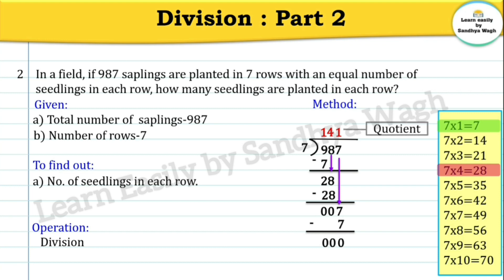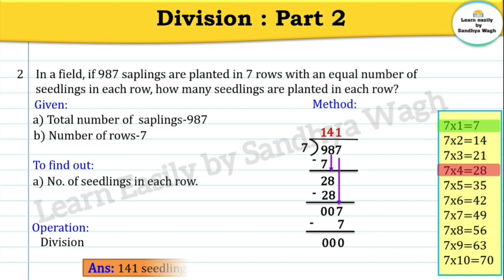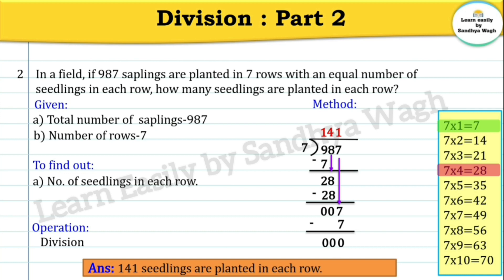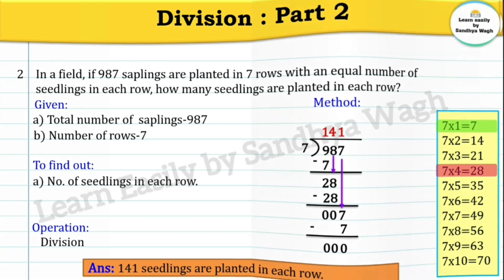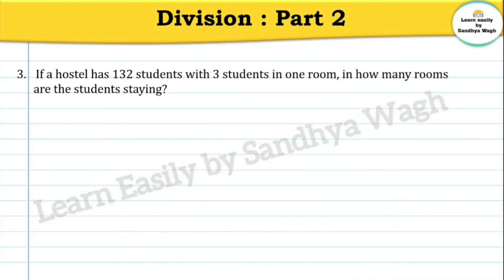Bringing down the next digit 7 gives 7. 7 ones are 7, so we write 1 as the quotient. Our quotient is 141 and remainder is 0. So the final answer is 141 seedlings are planted in each row. Next word problem: If a hostel has 132 students with 3 students in one room, in how many rooms are the students staying?